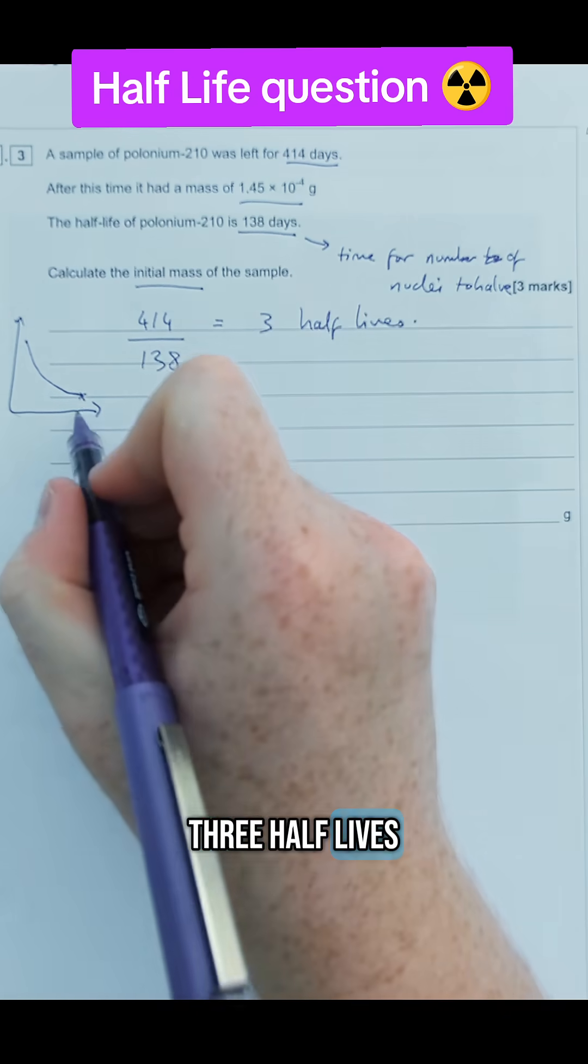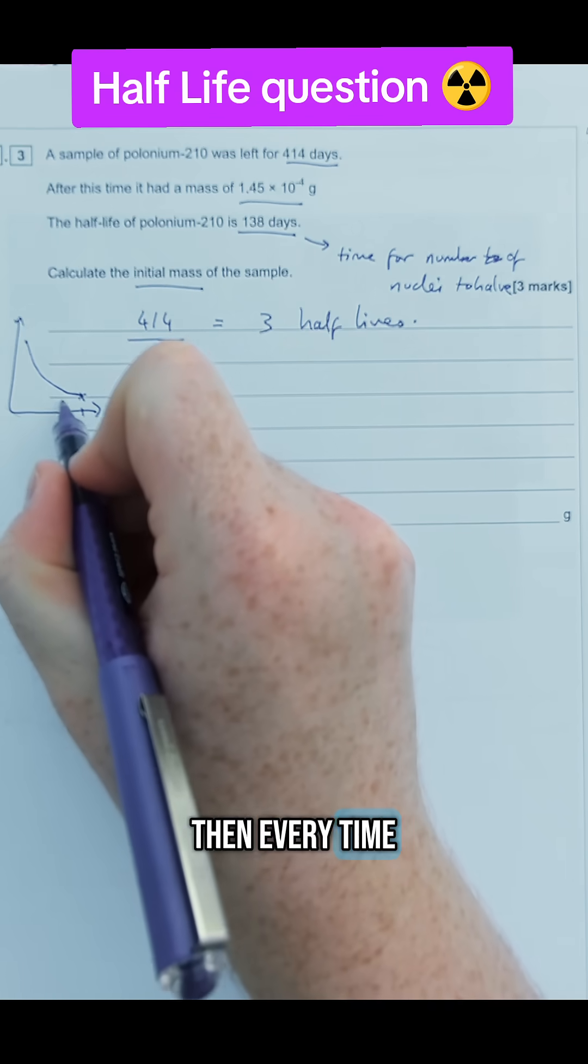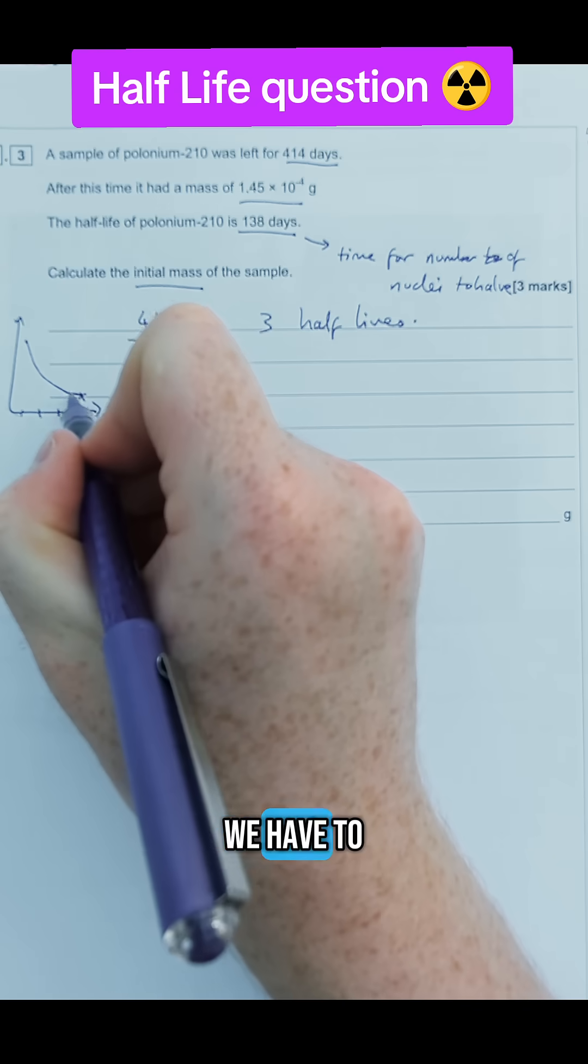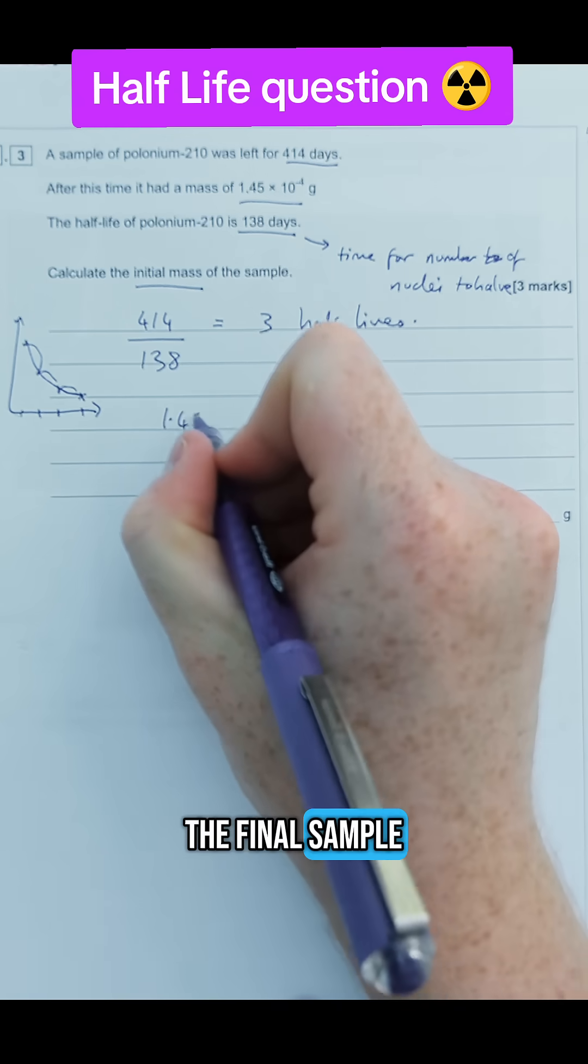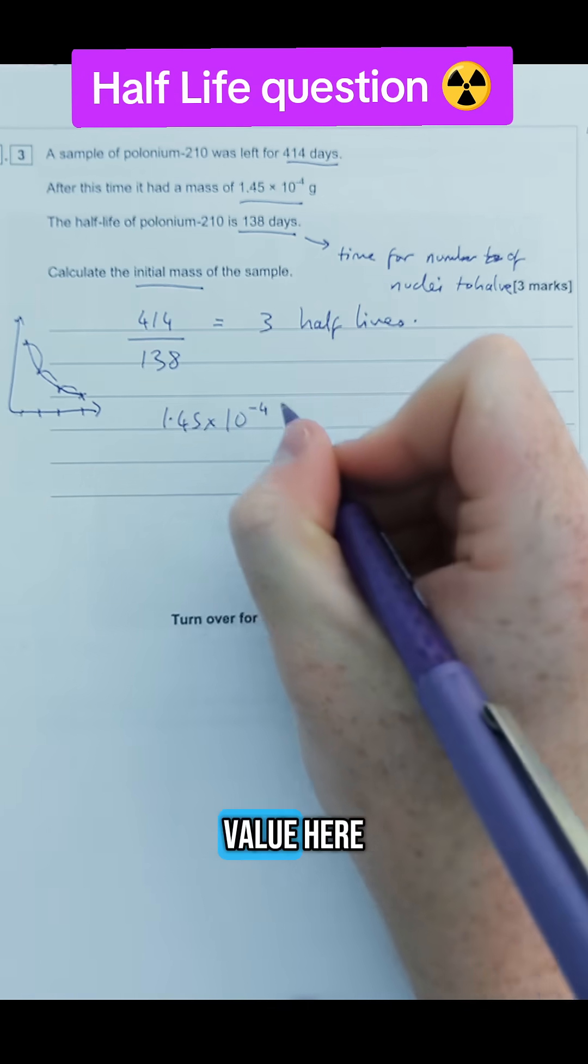So it's got three half-lives and it's here now, then every time we go backwards by one half-life we have to double it. So double it once, double it twice, double it again.